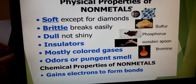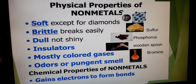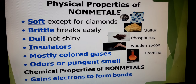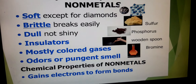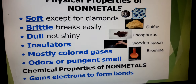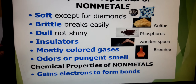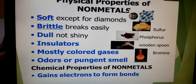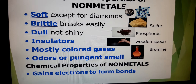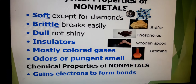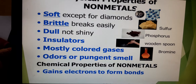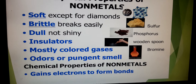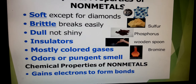These are the physical properties of non-metals. Non-metals are usually soft, except diamond which is very hard in nature. They are brittle, non-malleable, and non-ductile, breaking into pieces when hammered. Non-metals are dull and not shiny, except iodine and diamond. Non-metals are insulators — they do not conduct heat and electricity. Metals are good conductors, but non-metals are poor conductors. Exception: diamond is a good conductor of heat, and graphite — a form of carbon — is a good conductor of electricity.